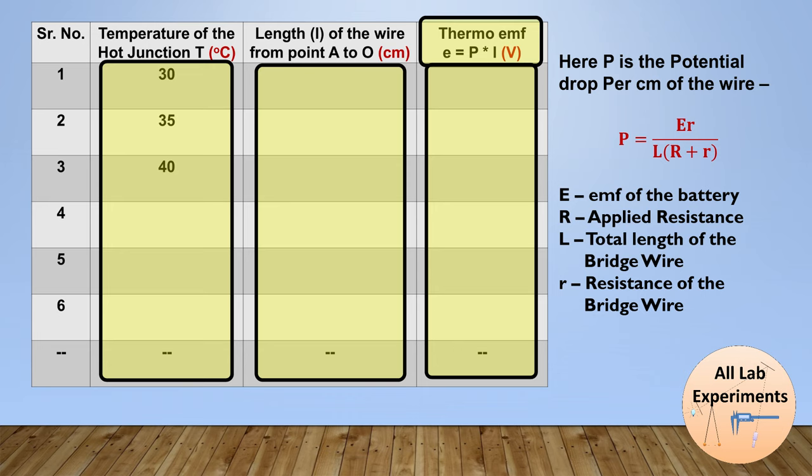These are EMF of the battery, applied resistance in the resistance box, total length of the bridge wire which is capital L, and the resistance of the bridge wire which we have calculated at the beginning of this experiment.